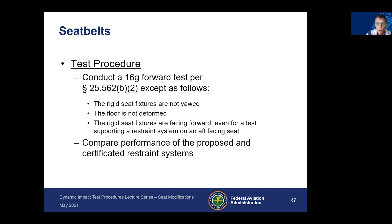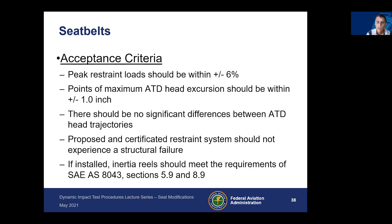You then compare the performance of the proposed and certificated restraint systems. The acceptance criteria are: peak restraint load should be within 6%; the point of maximum ATD head excursion should be within one inch; there should be no significant differences between ATD head trajectories; the proposed and certificated restraint system should not experience structural failure; and if inertial reels are installed, the MUT data should meet the requirements of SAE AS8043.